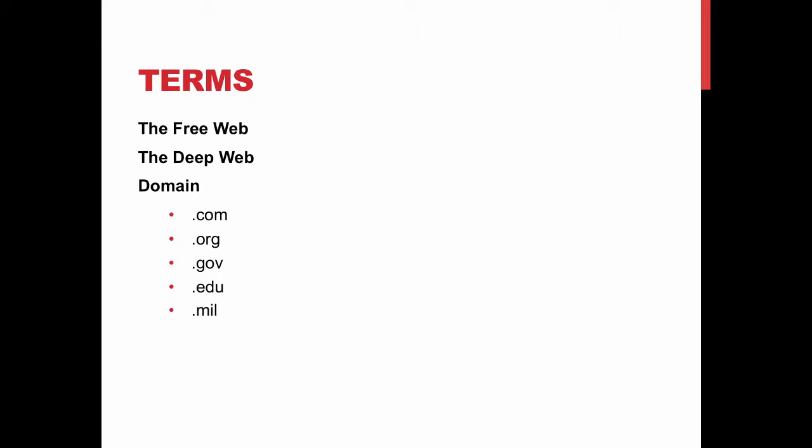Domain names are the endings in URLs. .com is for commercial websites — they're usually trying to sell you something. .org is for organizational websites. Often these are non-profit, but not always. They could be trying to influence you towards a certain opinion.